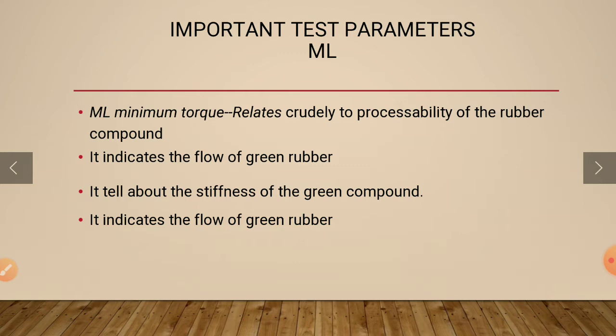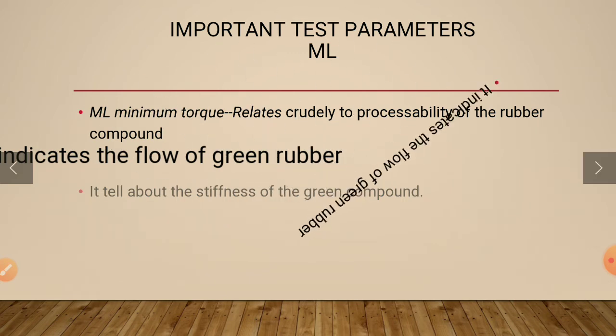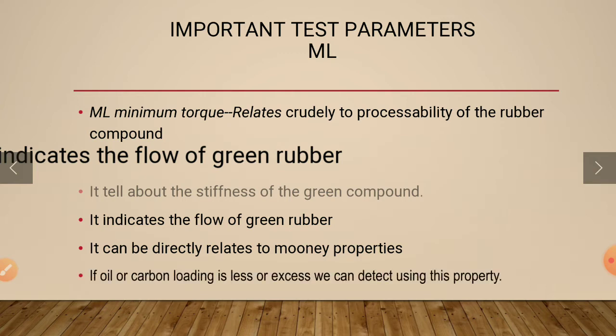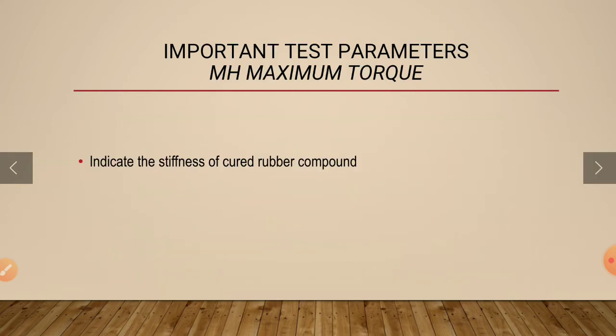ML denotes minimum torque and it can be directly related to Mooney properties. If this property is increased or decreased, the oil and carbon level may have differed.